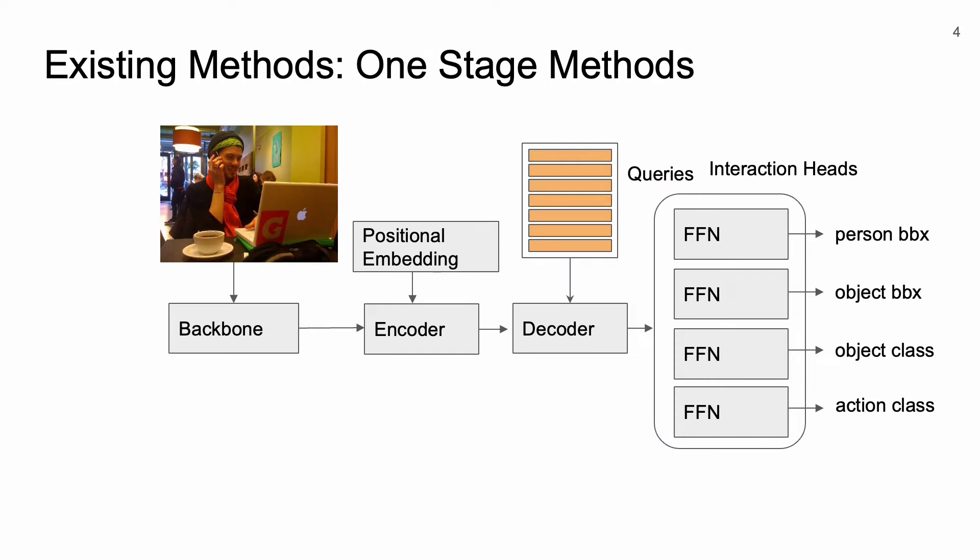One-stage networks are proposed to deal with the mentioned efficiency issues of two-stage networks. From the input image, extracted features are sent to a transformer encoder-decoder architecture. A set of learnable queries are utilized in the decoder via cross-attention to convert the queries into learned embeddings. These designs are efficient and achieve state-of-the-art performance.